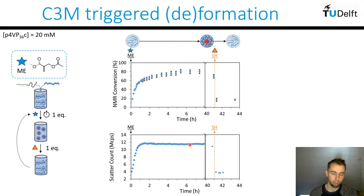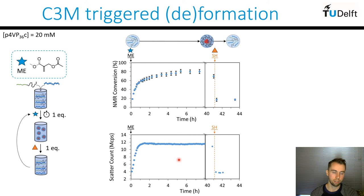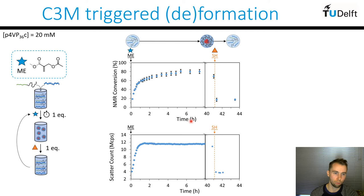We also followed this by dynamic light scattering to look at the Brownian motion of particles in solution and relate that to their size. As micelles form, we expect the amount of light scattered to increase significantly, as larger objects scatter more light than smaller objects. Looking at the amount of light scattered over time, matching conditions from our NMR experiment, they correlate pretty nicely. We see a rapid, roughly threefold increase in light scattered after addition of our ME fuel, and then when we add the thiol to regenerate the neutral polyamine and break apart the micelles, the scattered light rapidly drops down.